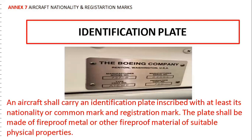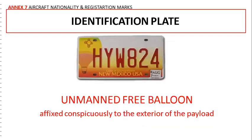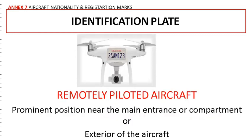An aircraft shall carry an identification plate inscribed with at least its nationality and registration mark. The plate shall be made of fireproof metal or other fireproof material of suitable physical properties. For unmanned free balloons, the identification plate is affixed conspicuously to the exterior of the payload. For remotely piloted aircraft, the identification plate is located at a prominent position near the main entrance or compartment, or on the exterior of the aircraft.